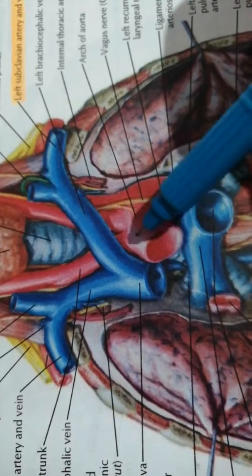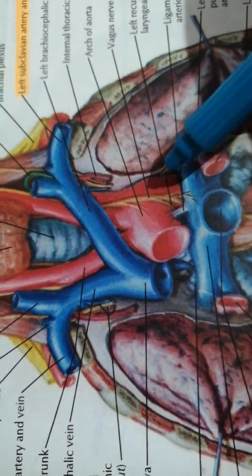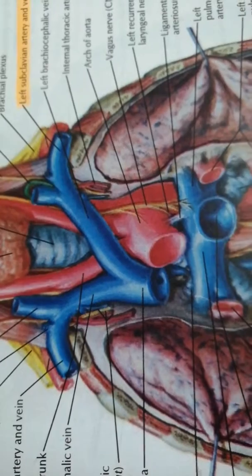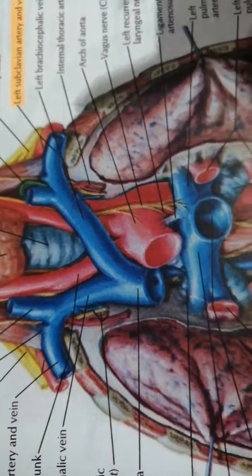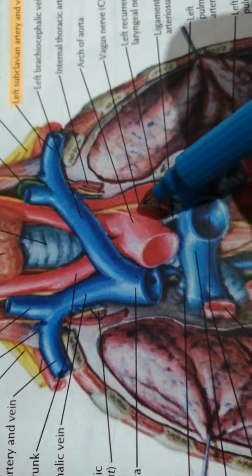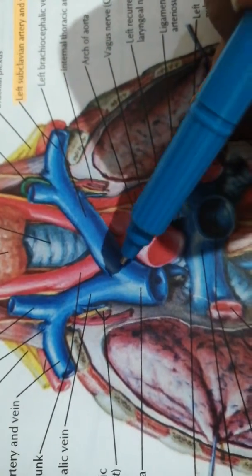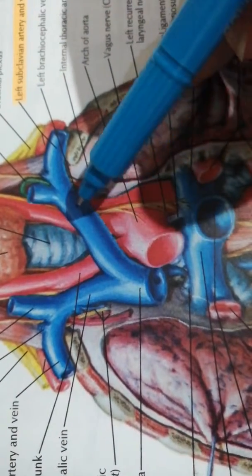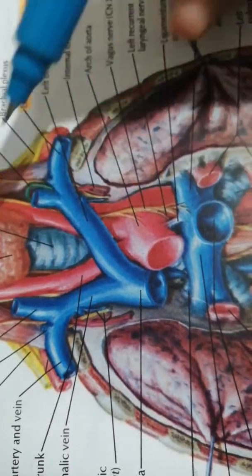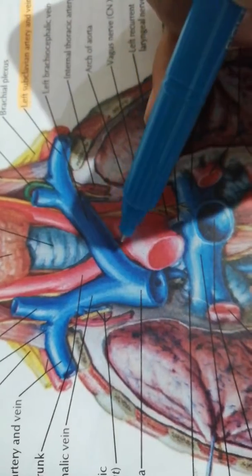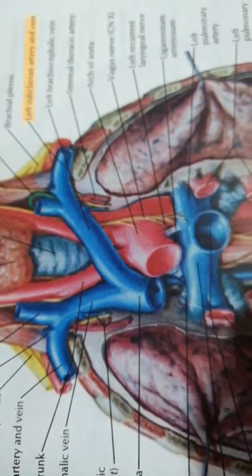You can clearly appreciate that the arch of the aorta is an anterior relation. The deep cardiac plexus is also an anterior relation because it is located behind the arch of the aorta. This is the left brachiocephalic vein — you can clearly appreciate that it is an anterior relation. The brachiocephalic trunk and left common carotid are also easily appreciable.